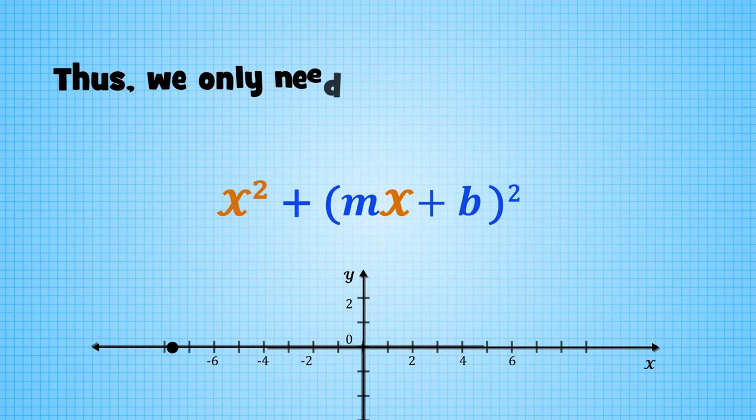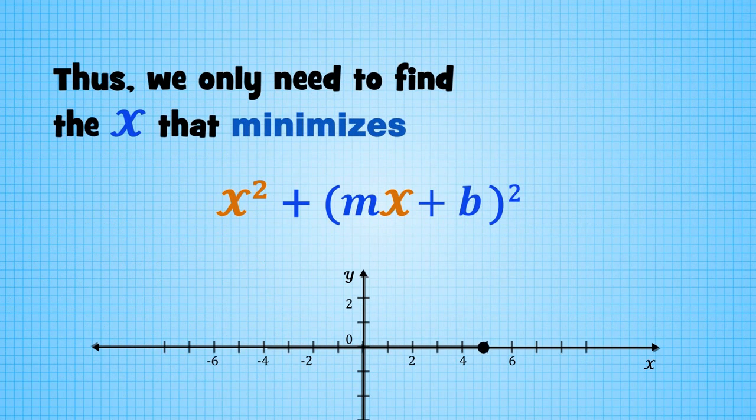Thus, we only need to find the x that minimizes x squared plus mx plus b squared.